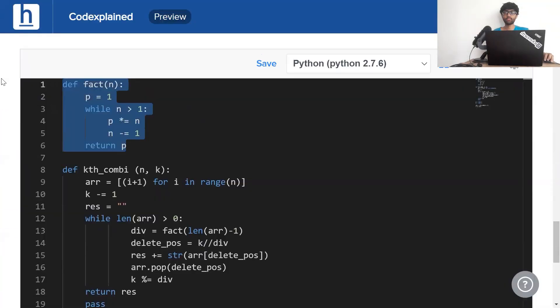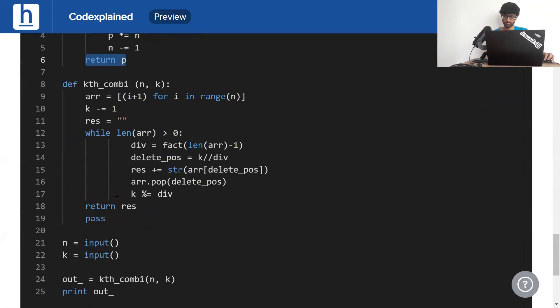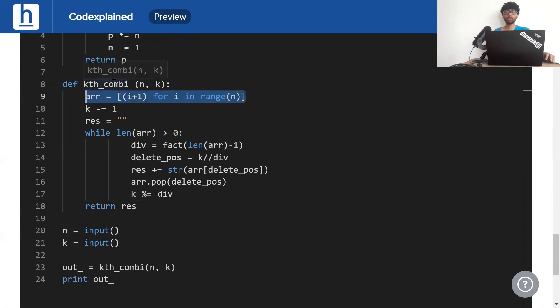So first I've defined the factorial function in order to generate factorial. It's pretty straightforward. While n is greater than or equal to 1, we multiply n with p, decrement it, and return p. It's a standard factorial program. We can remove this pass right here. Now we define the function itself. So first we build an array. We've been given n—say n is 4—so we've got to build an array 1, 2, 3, 4. That's what this does right here. We've got to subtract 1 from k in order to ensure it starts from 0 instead of 1, and our final result is initially an empty string.